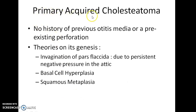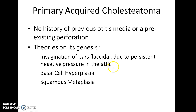Primary acquired cholesteatoma: in this, there is no history of previous otitis media or a pre-existing perforation. Theories on its genesis include invagination of pars flaccida due to persistent negative pressure in the attic — basically due to a defect in the Eustachian tube — as well as basal cell hyperplasia and squamous metaplasia.